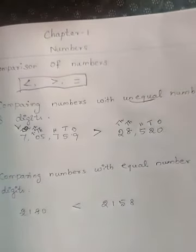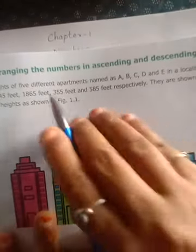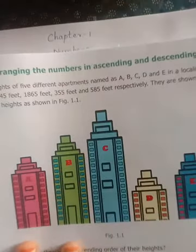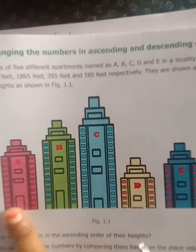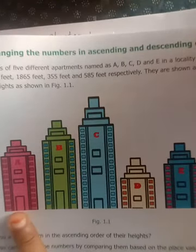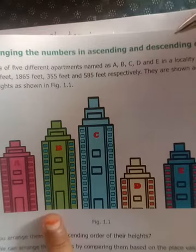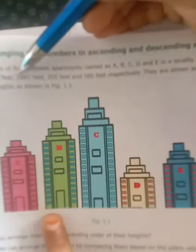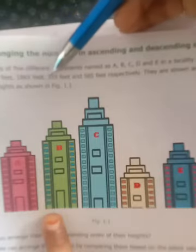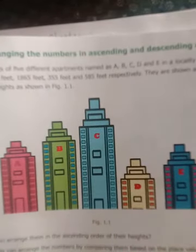Next we are going to learn about arranging numbers - that is ascending and descending order. For example, they have given some heights: nine hundred and eighty five feet, one thousand one hundred and forty five feet, one thousand eight hundred and sixty five feet, three hundred and fifty five feet, and five hundred and eighty five feet. They have arranged these according to their heights.